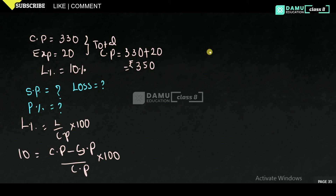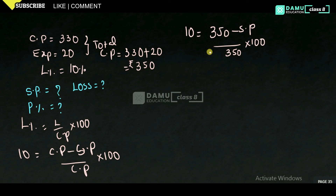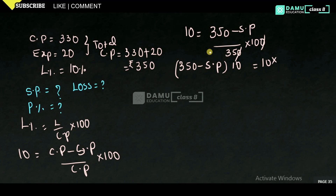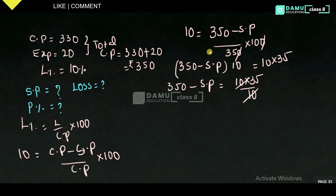Loss percentage equals CP minus SP divided by CP, into 100. So 10 equals 350 minus SP divided by 350, into 100. Cancelling 10 and 10, we get 350 minus SP into 10 divided by 35 equals 10 into 35. Then 350 minus SP equals 35.